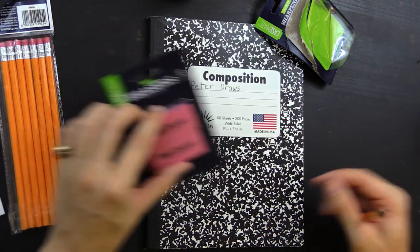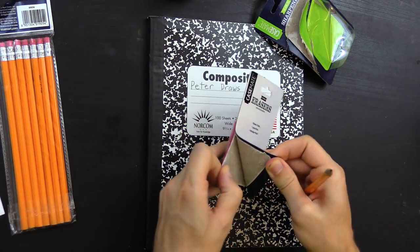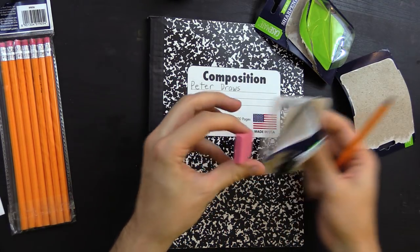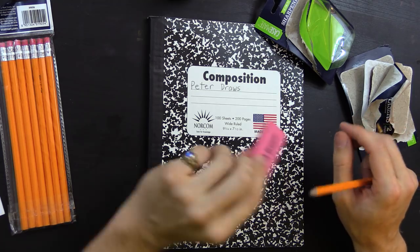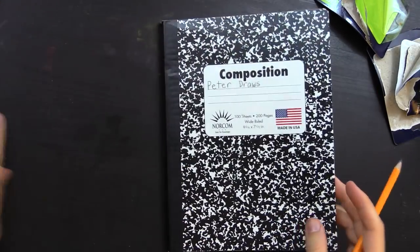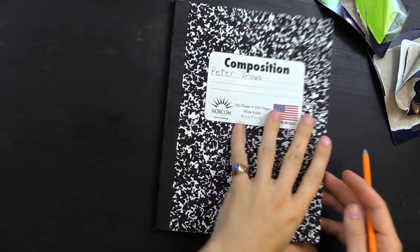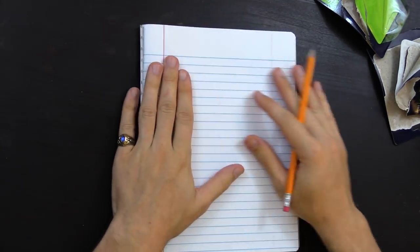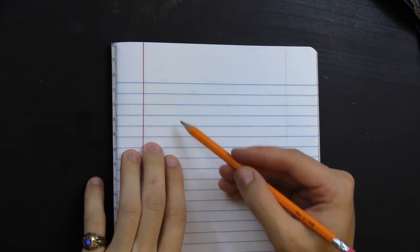I don't think I'm going to really use these erasers, but I want to open them and smell them anyways. Anyways, so let's begin here. Peter draws composition. I'm going to fold the back back. And you can just start right here scribbling away.